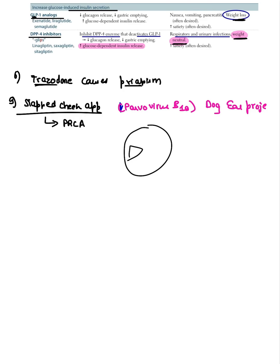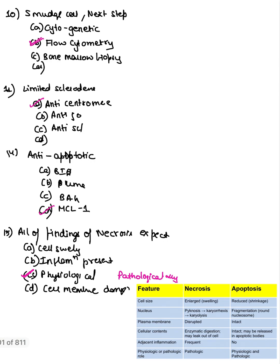The next question was about slapped cheek appearance — that typical facial appearance that looks like someone has been slapped. That is parvovirus B19, known as fifth disease. It affects the P antigen and presents as erythema infectiosum — a classic, repeated exam question.